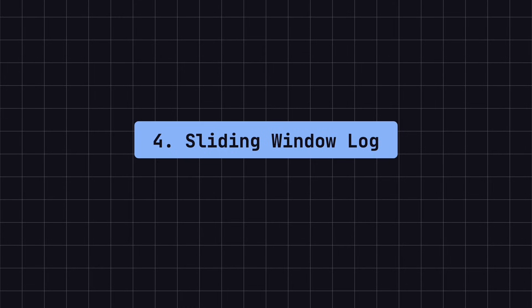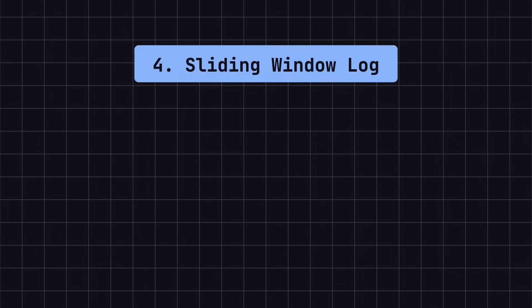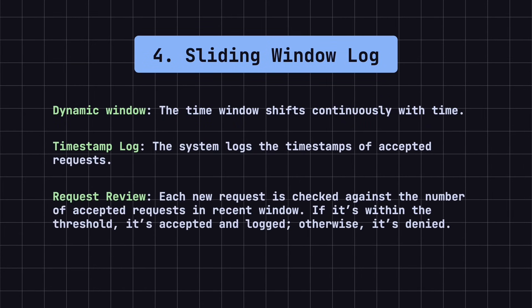The fourth rate limiting algorithm is the sliding window log algorithm. It improves upon the fixed window counter algorithm by addressing the problem of request spikes at the boundaries of fixed windows. Unlike the fixed window approach, the sliding window algorithm uses a dynamic window that shifts as time progresses. In this algorithm, the system logs the timestamp of each accepted request. When a new request arrives, the system checks the log to count the number of requests processed within the recent window. If the count is within the limit, the request is accepted and logged; otherwise, it is rejected. This method allows for more precise and smoother traffic control.